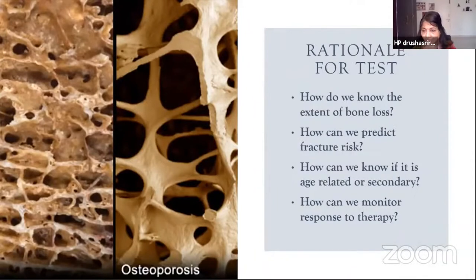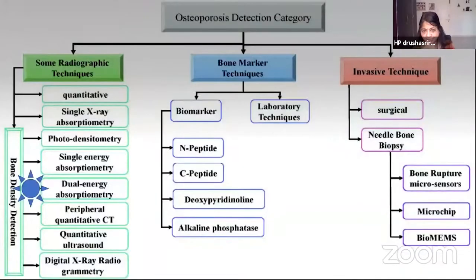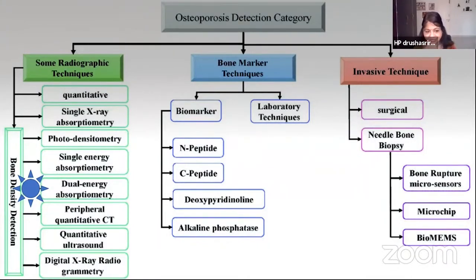Why do we need this test? How else can we know the extent of bone loss? How can we predict fracture risk? How can we know if this is age-related or secondary osteoporosis? And when we treat the patient, how can we monitor therapy without the right tool? As you can see, there are many techniques — radiographic, bone marker, and invasive. Biopsies remain a research tool. Bone markers are used primarily for monitoring therapy, not diagnosis. Radiographic techniques are what we have for diagnosis, and the gold standard — recommended by the WHO — is dual-energy absorptiometry, or DEXA. Of course, we also have FRAX and other tools.